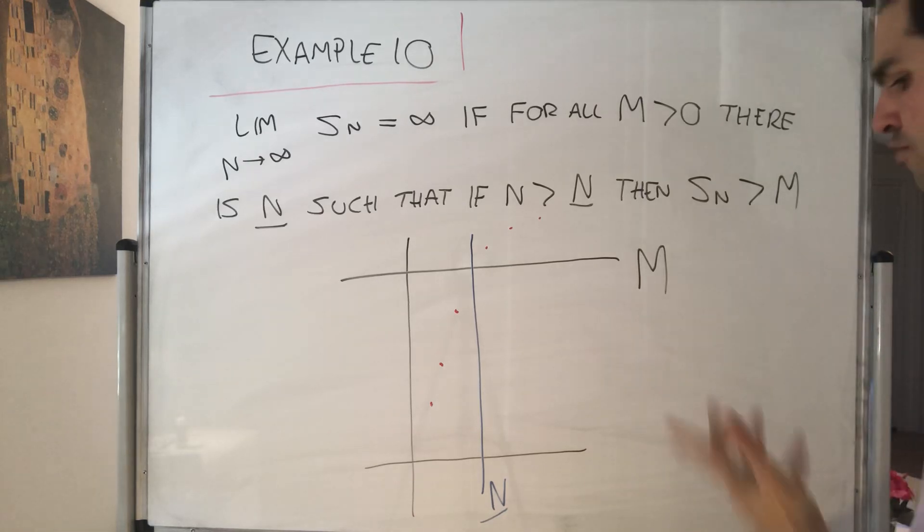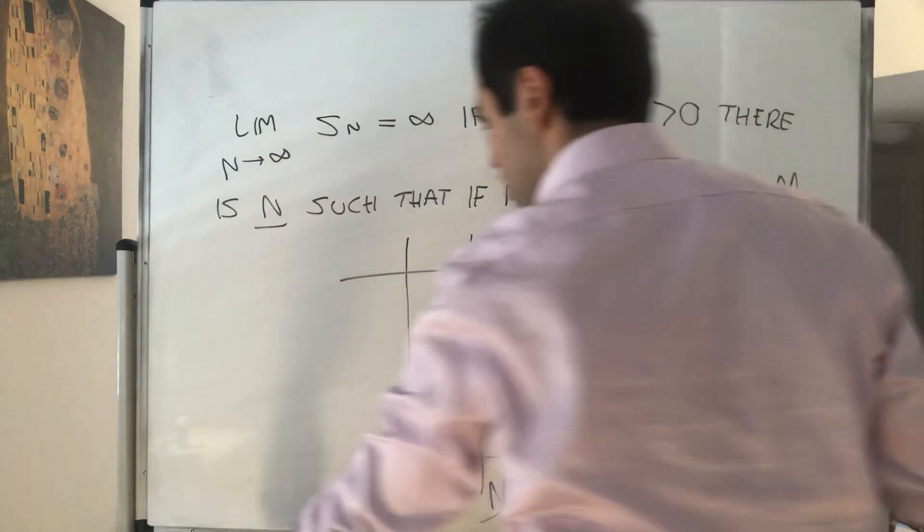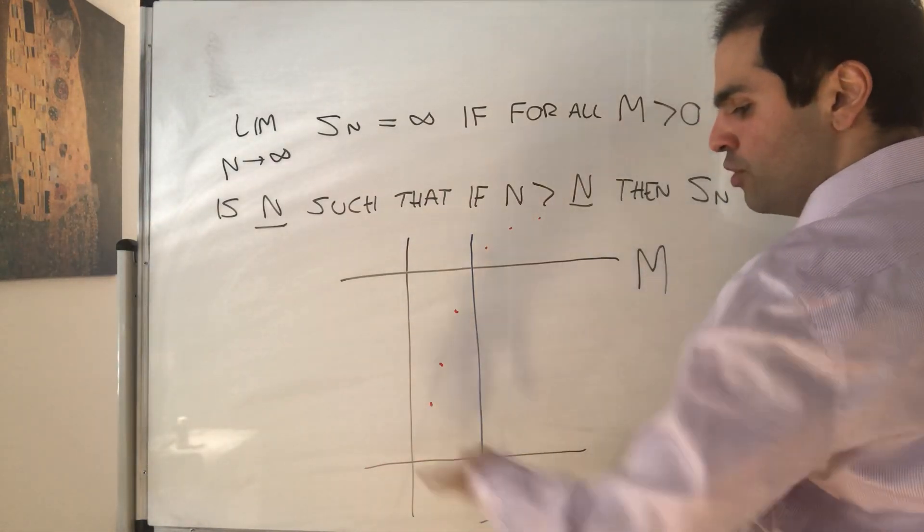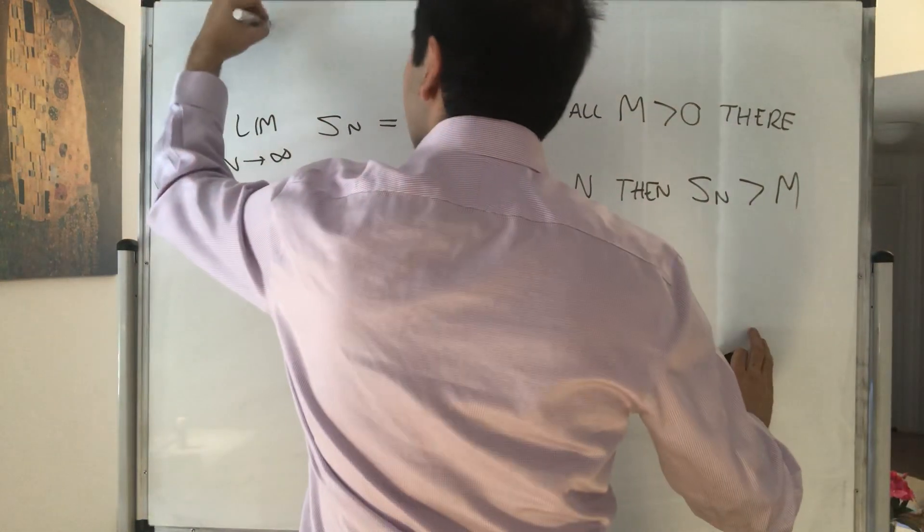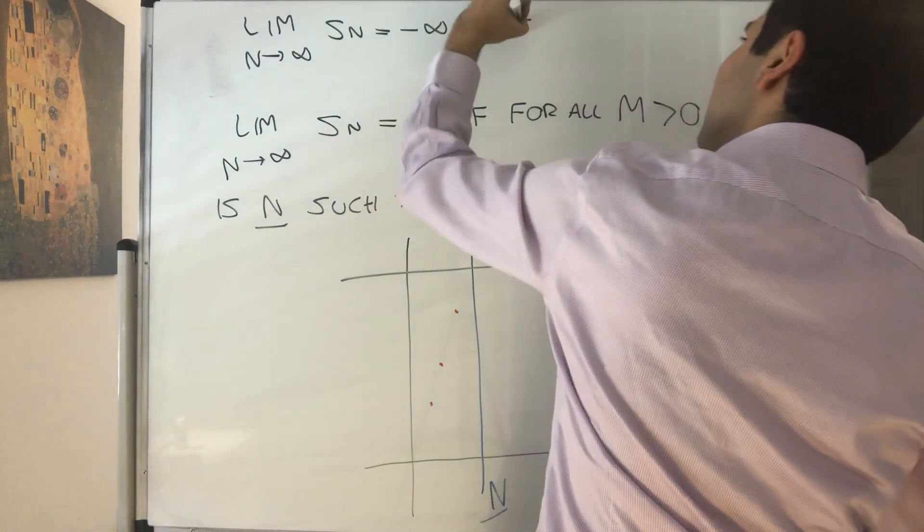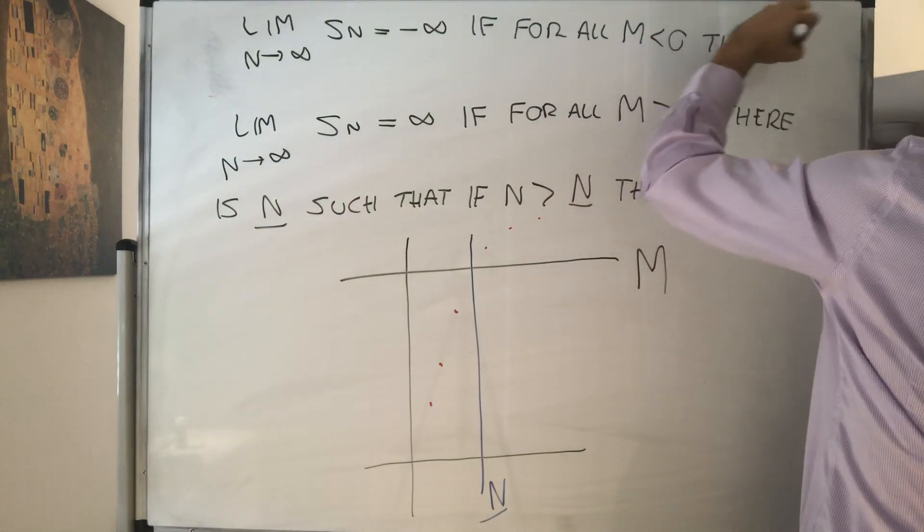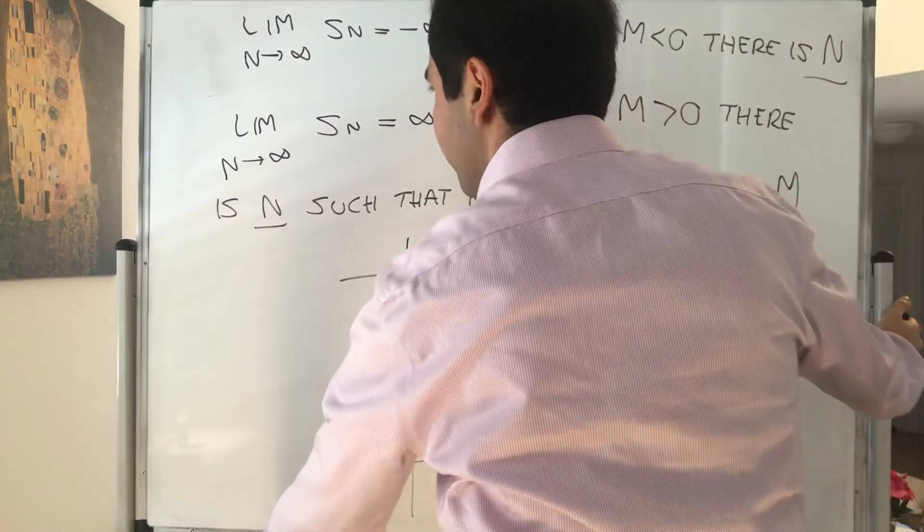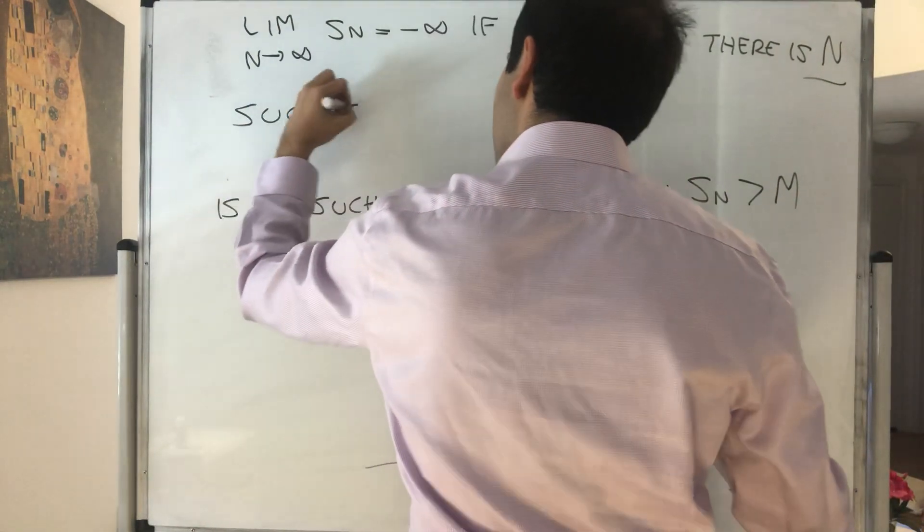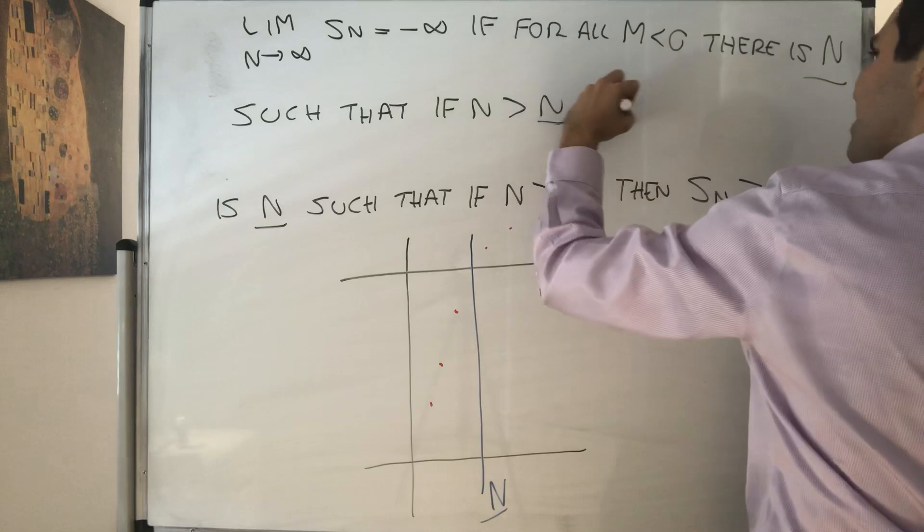And similarly for the limit being minus infinity, so for minus infinity it just means whichever negative number I give you, the sequence is below that negative number. So limit n goes to infinity of Sn is minus infinity if for all m negative there is n such that after that threshold, your sequence is less than that number.